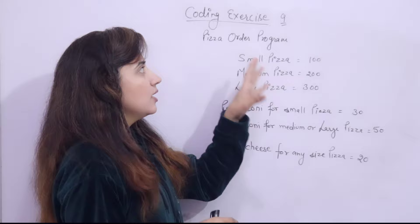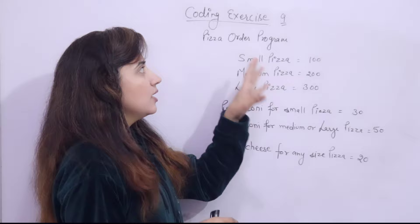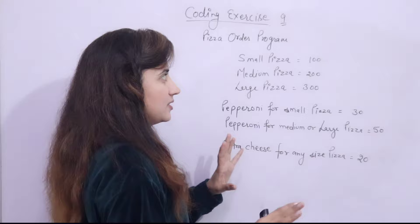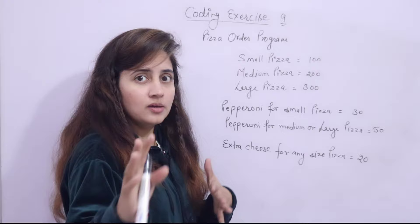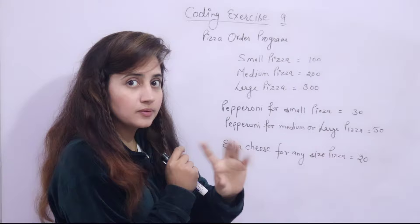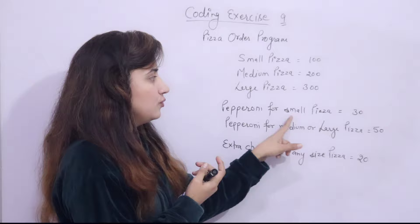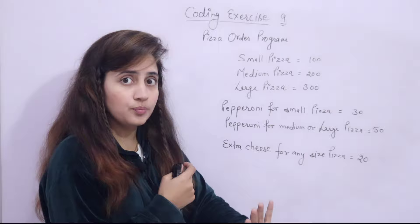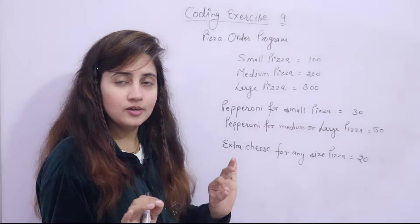You need to write a program for an automatic pizza order system. Based on user input, you need to calculate the final bill. Small pizza is 100 rupees, medium pizza is 200, large pizza is 300. Pepperoni for small pizza is 30 rupees extra, and pepperoni for medium or large pizza is 50 rupees extra.